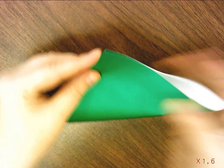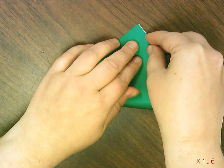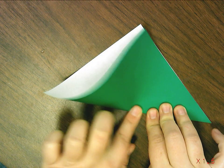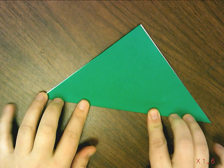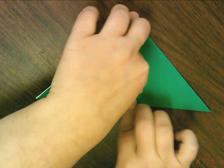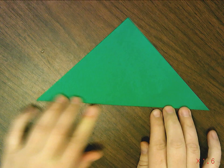Fold it corner to corner. You guys can make the sound effects, the oohs and ahs. Into a triangle. That wasn't a very good triangle. I'm going to make a better one. All right. Triangle.